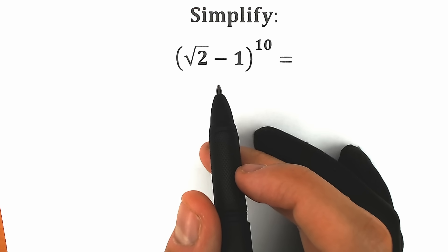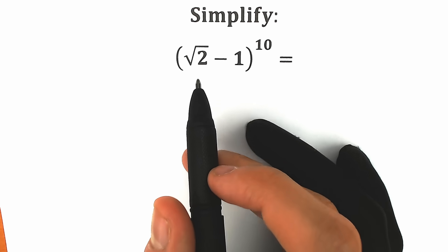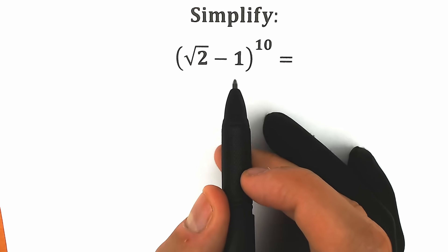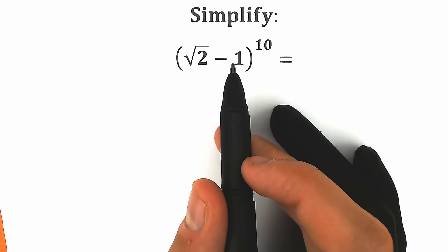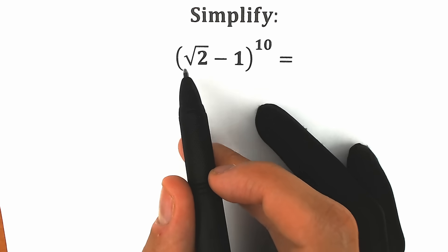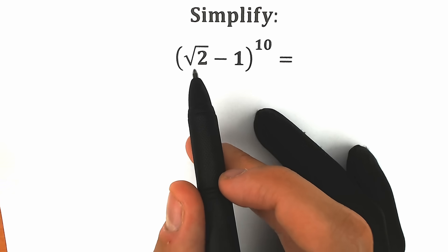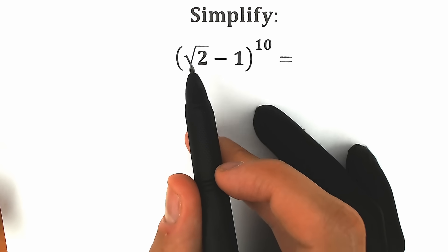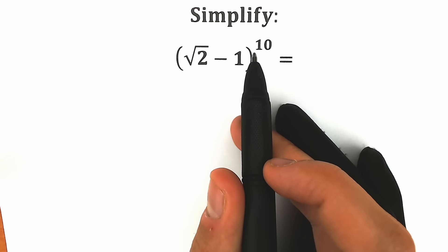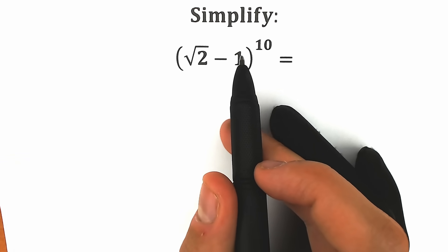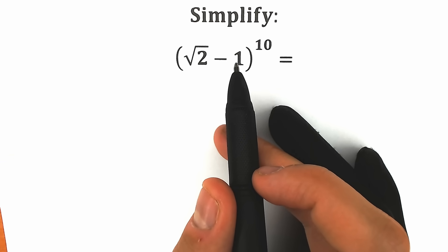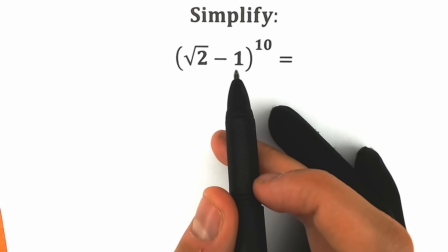Today we have a really interesting question from Andrew's examination. We have square root of 2 minus 1. We need to raise this expression to the 10th power. A lot of students might say we can easily find the approximate value of square root of 2 minus 1 and raise it to the 10th power. But what about an algebraic solution? How can we find our final answer to this question?